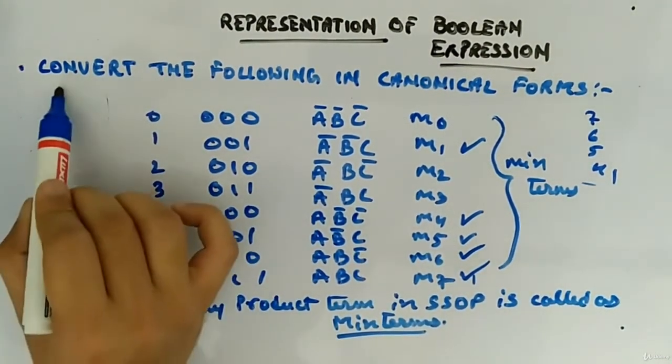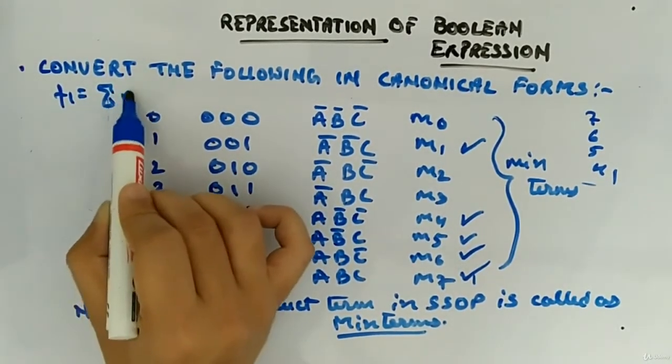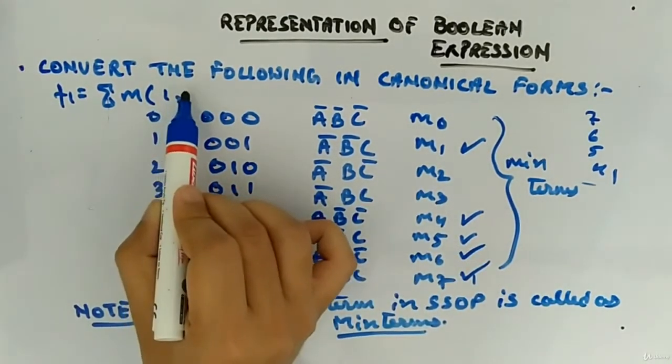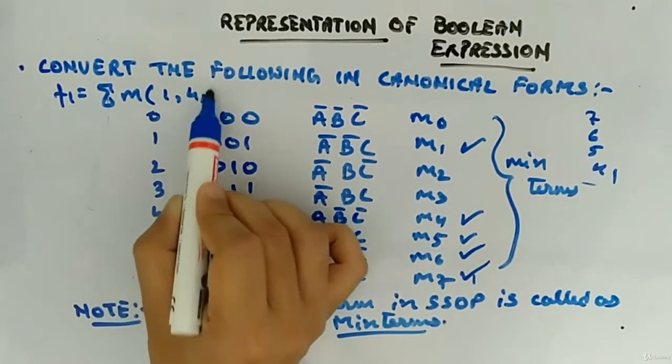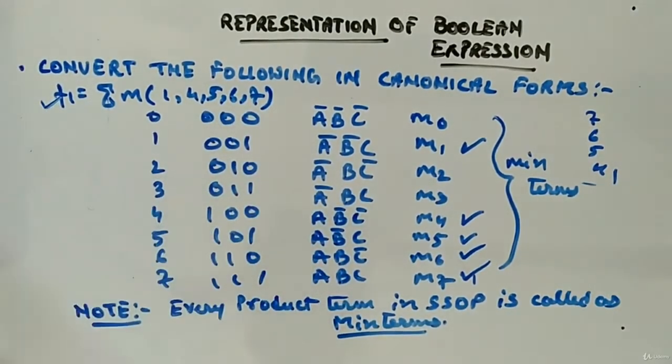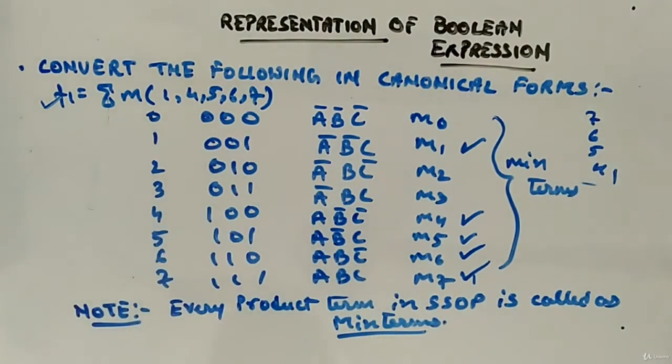F1 if you have to write in terms of minterms, then F1 will be equal to sum m, small m, 1, 4, 5, 6, 7. That is how you represent. So this is the way you represent.